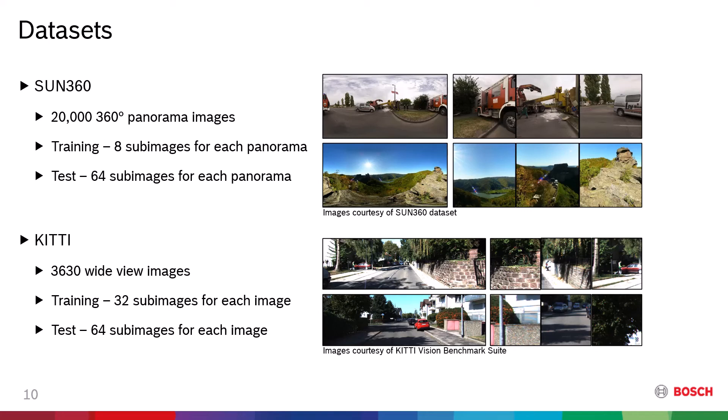For the training, we generated 8 sub-images by evenly dividing the azimuth range. Our KITTI dataset is composed of 3,630 images from randomly chosen driving sequences. We generated 32 sub-images from each image to match the number of images of the Sun360 dataset. In the test process, the number of sub-images was fixed to 64 for both datasets.